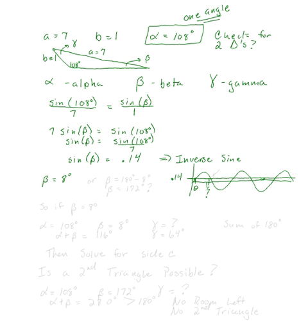There are actually two possible solutions here. Beta could be equal to eight degrees, or beta might also equal 180 degrees minus eight degrees — in our case, beta might also be equal to 172 degrees. I say 'might' because we have to look further to see if I can actually form a second triangle with this 172-degree option. I know eight degrees is possible; I just don't know for sure if this second option of 172 is also going to be a possibility for forming a second triangle.